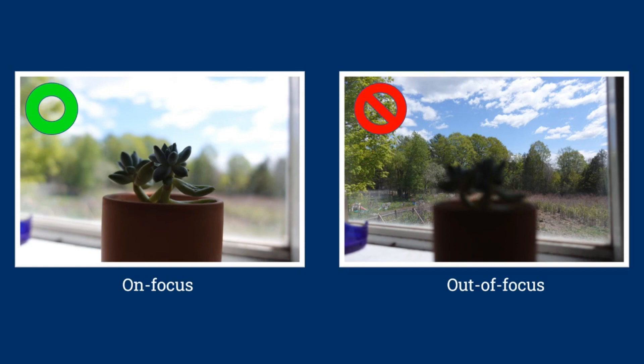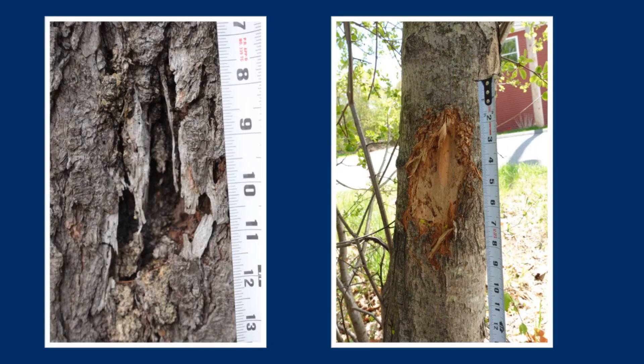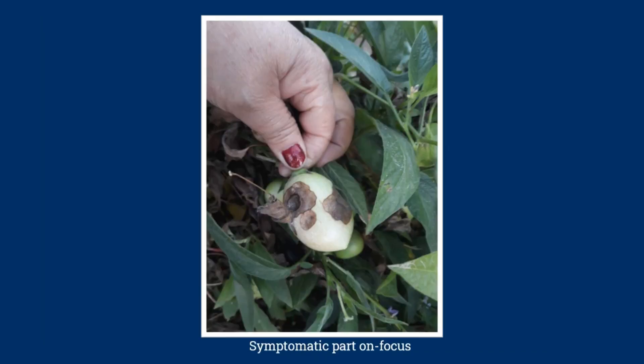It's also helpful when an object is used as a size reference in the photo. These can include your hand, a coin, or a ruler when taking pictures of individual branches, leaves, stem, or roots. The object can also help bring the image into focus.